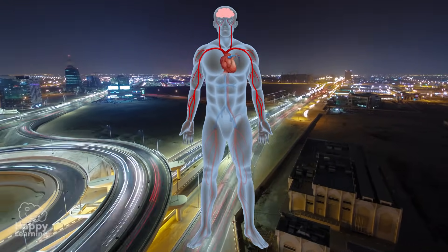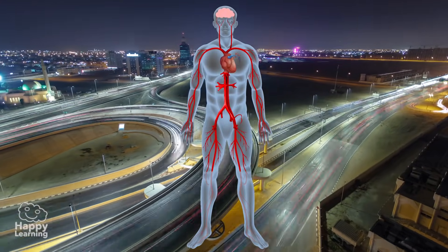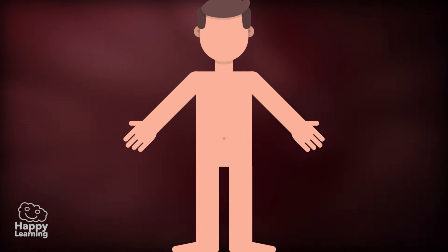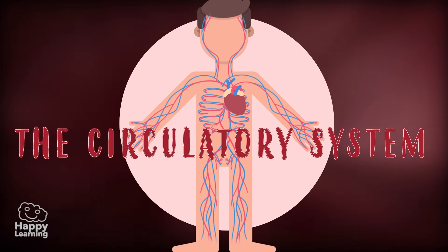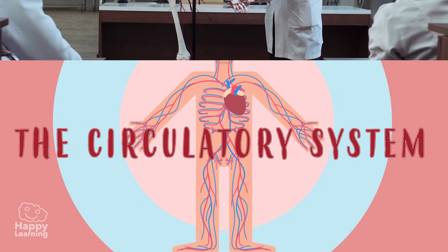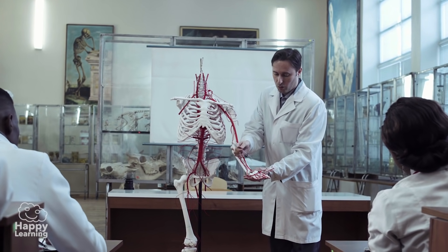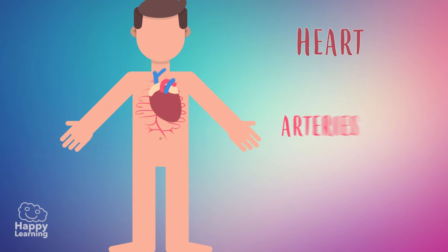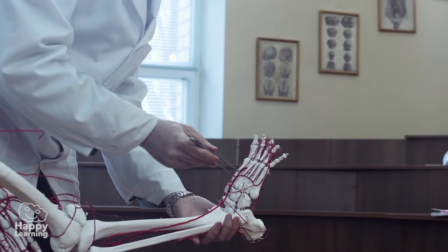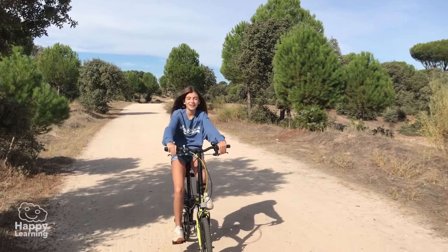Hello friends! Welcome to a new Happy Learning video. Today we're going to learn about the circulatory system of the human body. The main function of the circulatory system is to carry through the blood the nutrients to the cells of our body. It is formed by the heart, arteries and veins, and its proper functioning is essential for us to have good health.